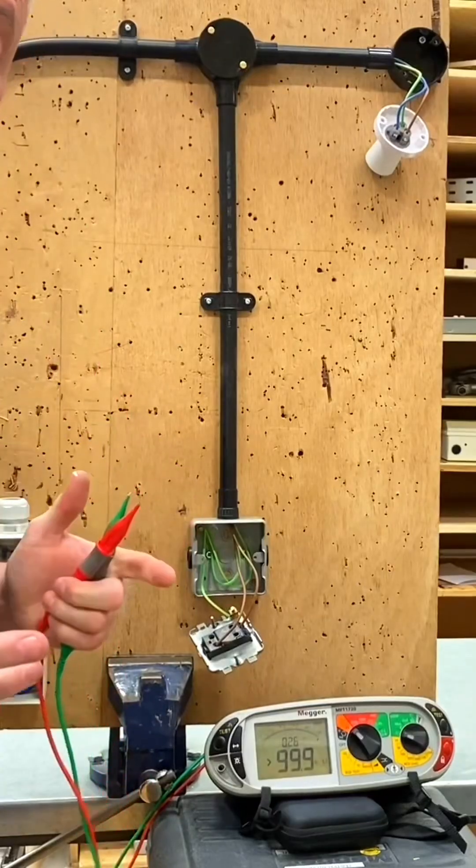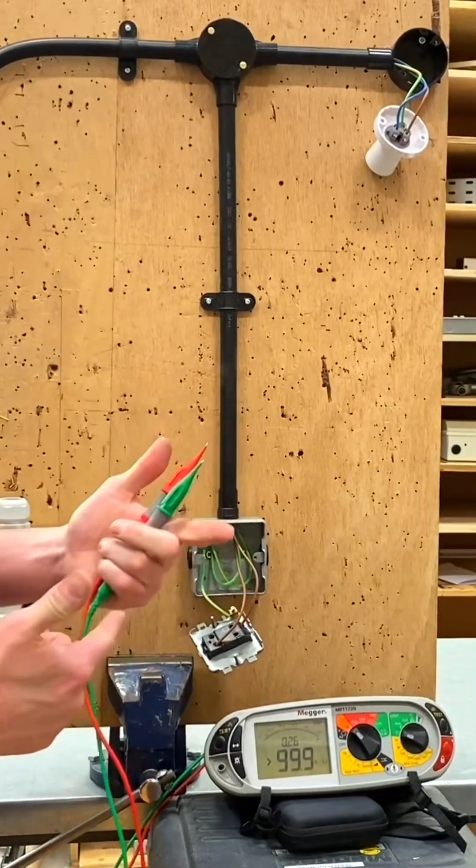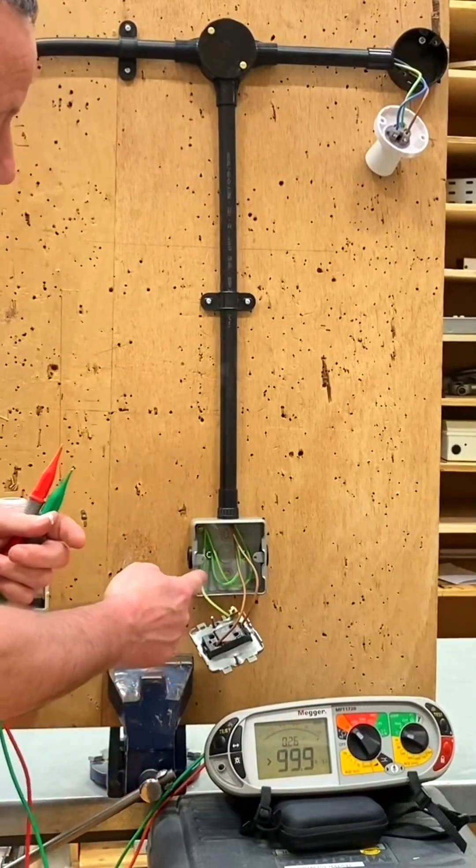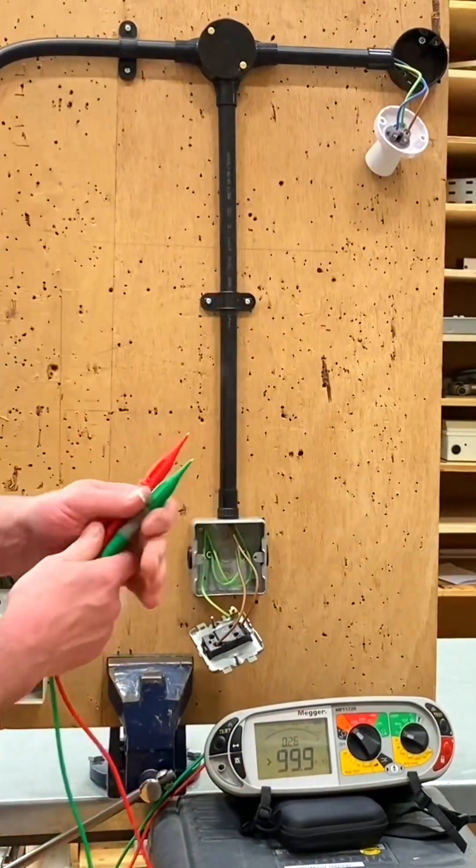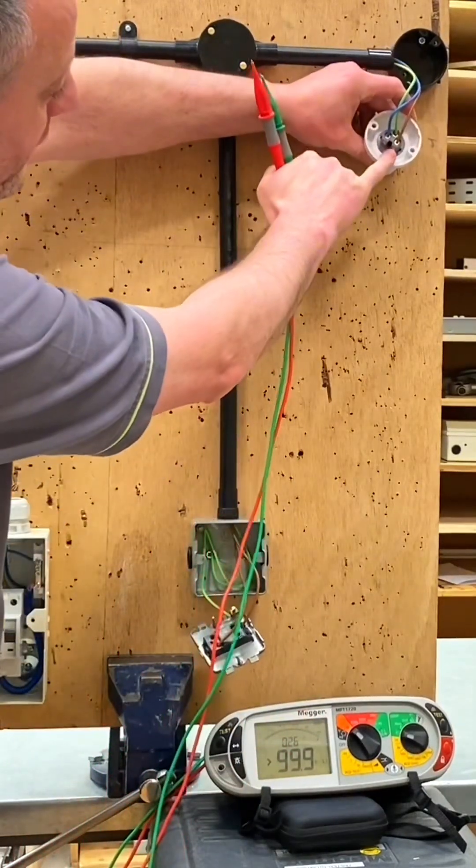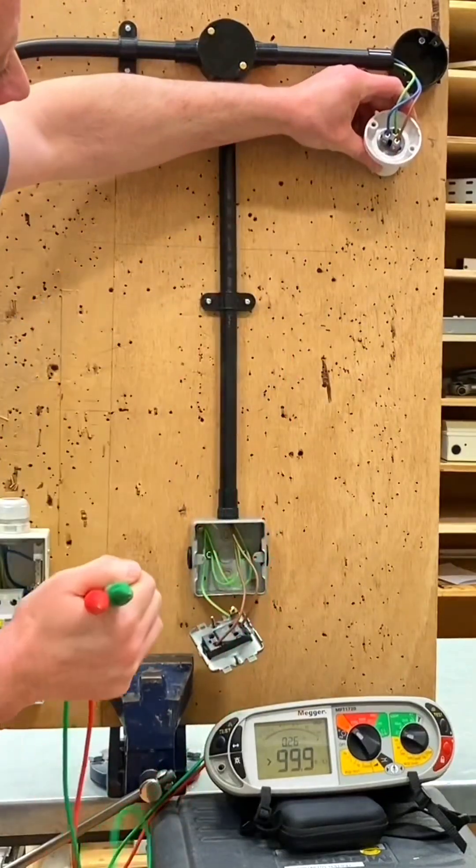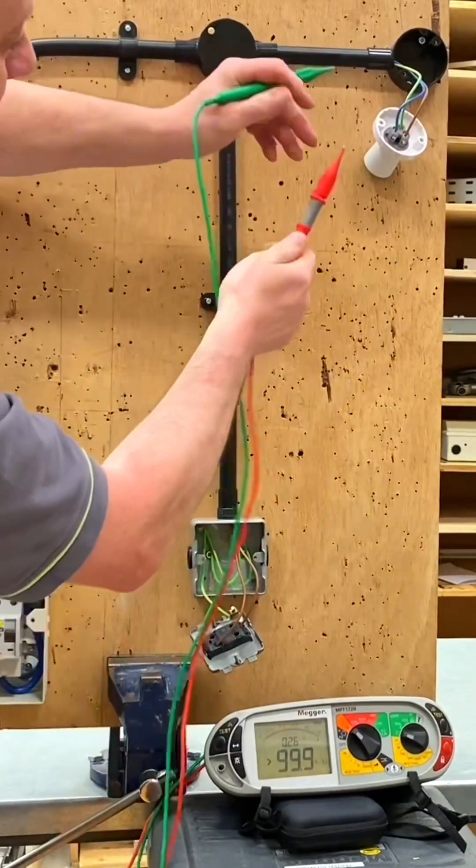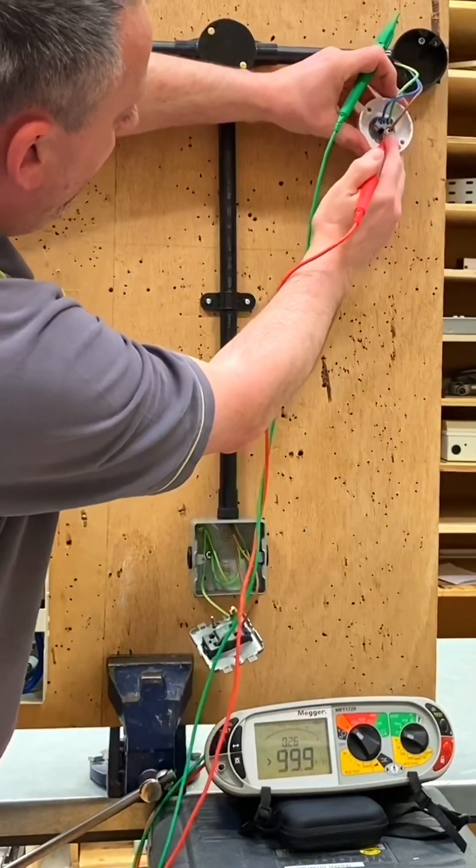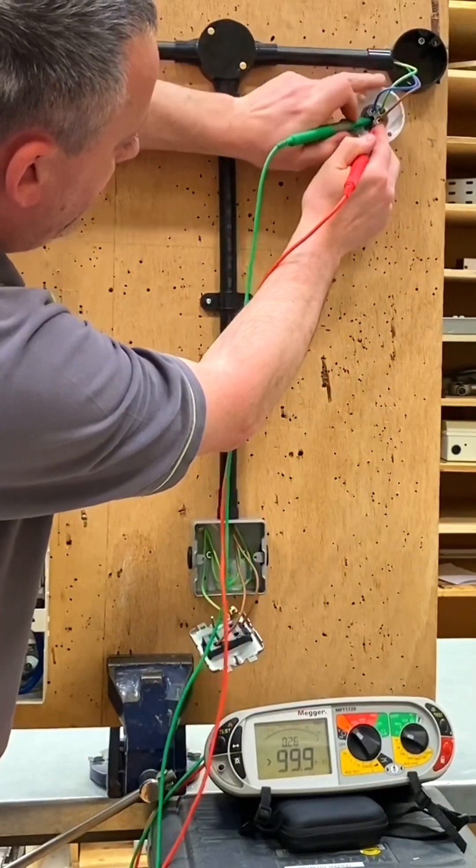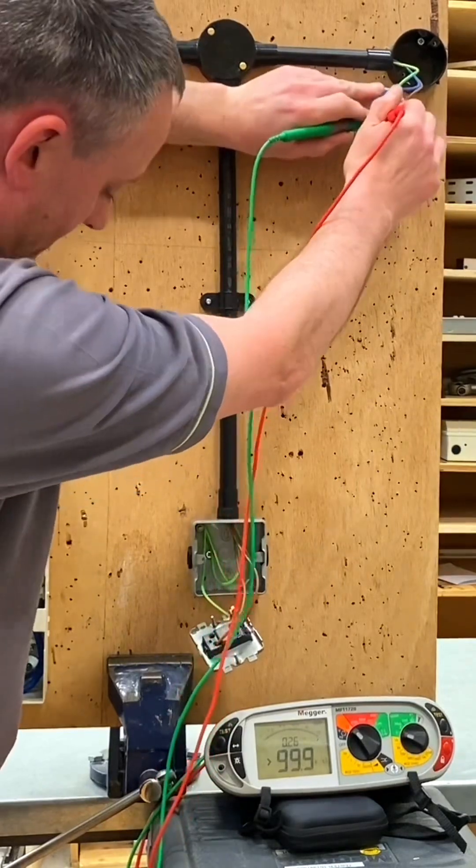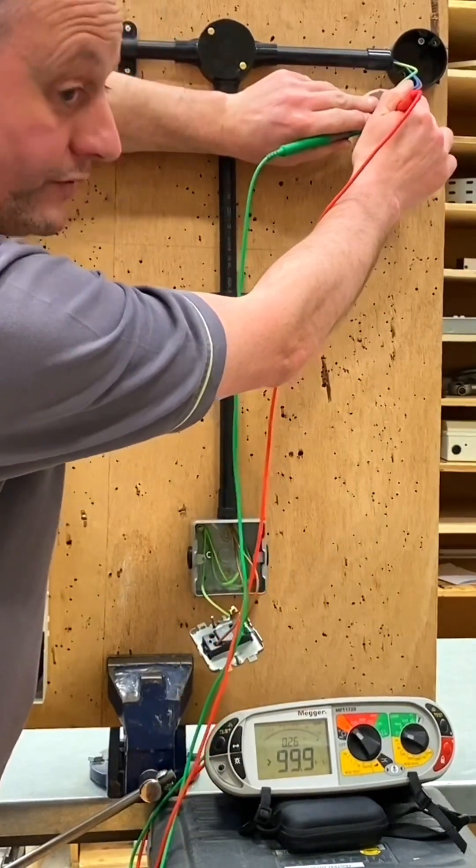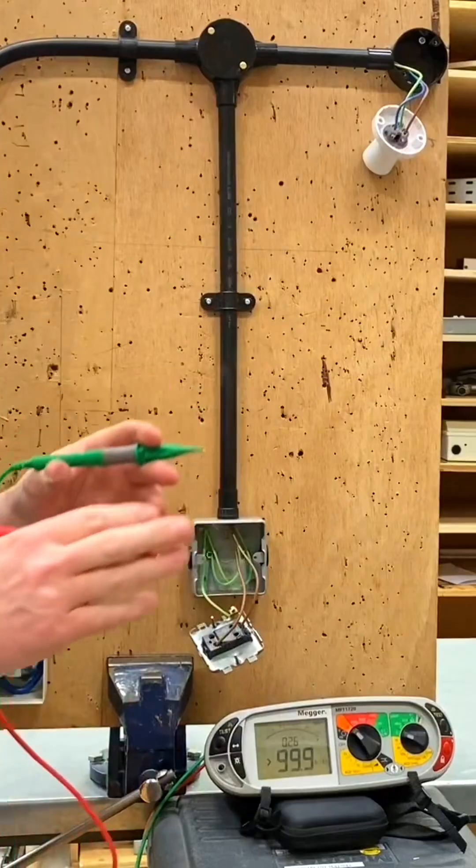I've pulled the camera back so you can see the operator switch and the full scale deflection of the instrument. I'll talk you through where I'm probing. We're probing into the line and CPC in the fitting itself. If I go line and CPC first, we have no reading whatsoever. You can start panicking, or you can think - is the switch in the off position?